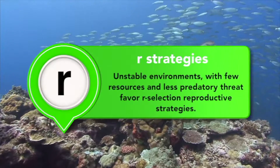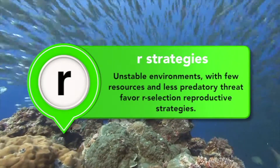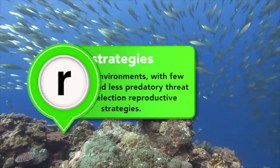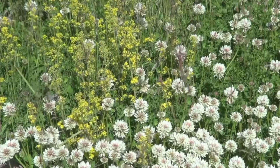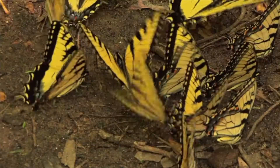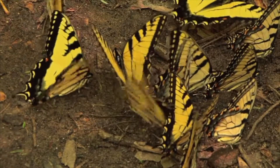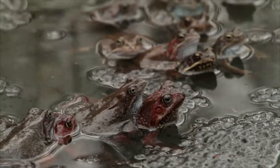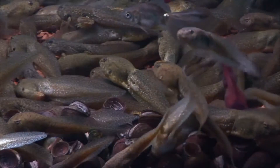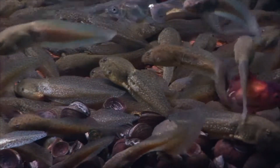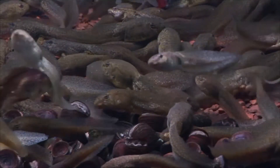On the other end of the continuum, unstable environments with few resources and less predatory threat favor R-selection reproductive strategies. Small rodents, most insects, bacteria, and weeds are examples of R-species. Species within these groups have a lot of offspring and reach maturity quickly, often living short lives. Few R-selected species engage in any sort of mate competition or mating rituals. Juvenile mortality is very high. The few individuals that reproduce do so only once or a few times, but they produce a large number of offspring.